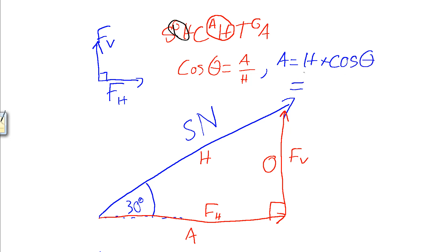We substitute in the values for our hypotenuse, the five newton force, and our theta, our thirty degree angle. And that gives us a value of 4.33 newtons. So, the horizontal component of this five newton force, acting at thirty degrees above the horizontal, is 4.33 newtons.